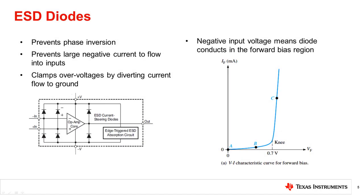Fortunately, some comparators are designed to prevent phase inversion. As you see in the figure on the bottom left, these comparators have internal ESD protection diodes connected from the negative supply pin to the input pins. This prevents large negative current spikes from flowing directly into the input pins and causing damage to the comparator. The ESD diode helps clamp any overvoltages to the negative supply rail by diverting current flow to ground, and thereby protects the comparator.